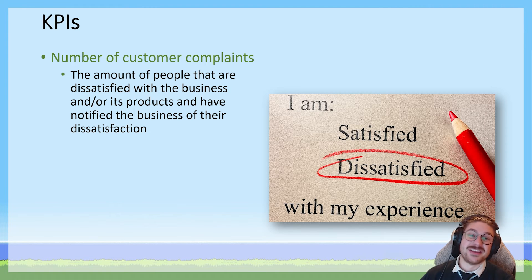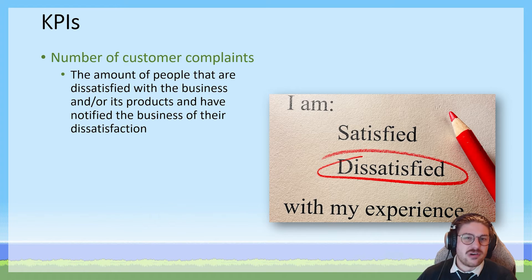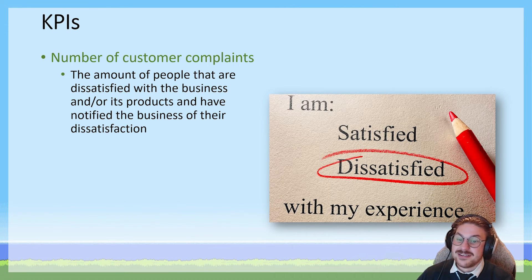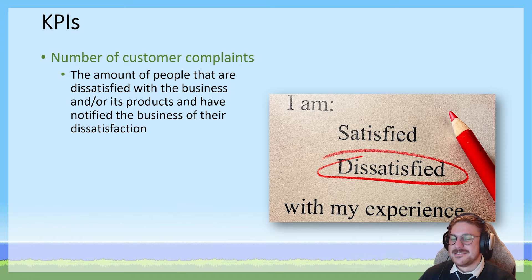Number of customer complaints refers to the number of times a customer has made their dissatisfaction known — whether communicating it directly to the business, through online reviews, or Google reviews. Every time a customer documents unhappiness, they're probably expressing what five other customers who were unhappy but didn't bother to complain also felt. A one-star review likely means others have had similar negative experiences. Unless complaints are very specific, it might take market research or reaching out to those customers to identify exactly what they were unhappy about. But it will generally represent problems in your business that require corrective action.